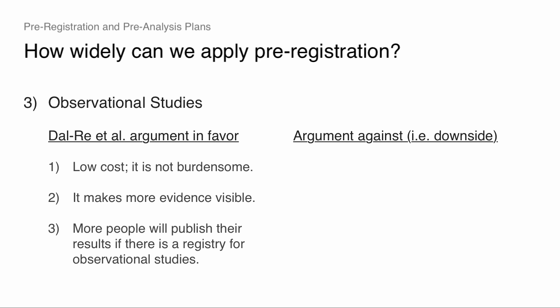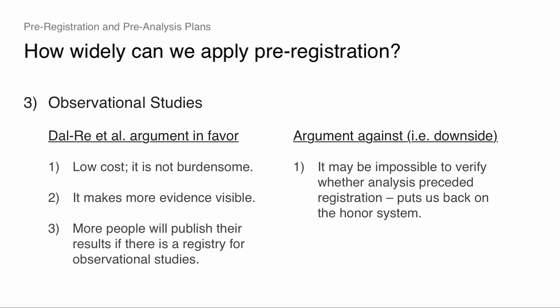What's the downside? They talk about this downside but kind of brush it off — I think this is the big downside. If we're talking about registering studies using easily available, publicly available data, it may be impossible to verify whether the analysis preceded the registration. What's to stop people who are somewhat dishonest, or who saw a related analysis in another paper, from basically registering something after they already know what the result is? We're kind of on the honor system here, and the whole point of registration was to get away from the honor system.